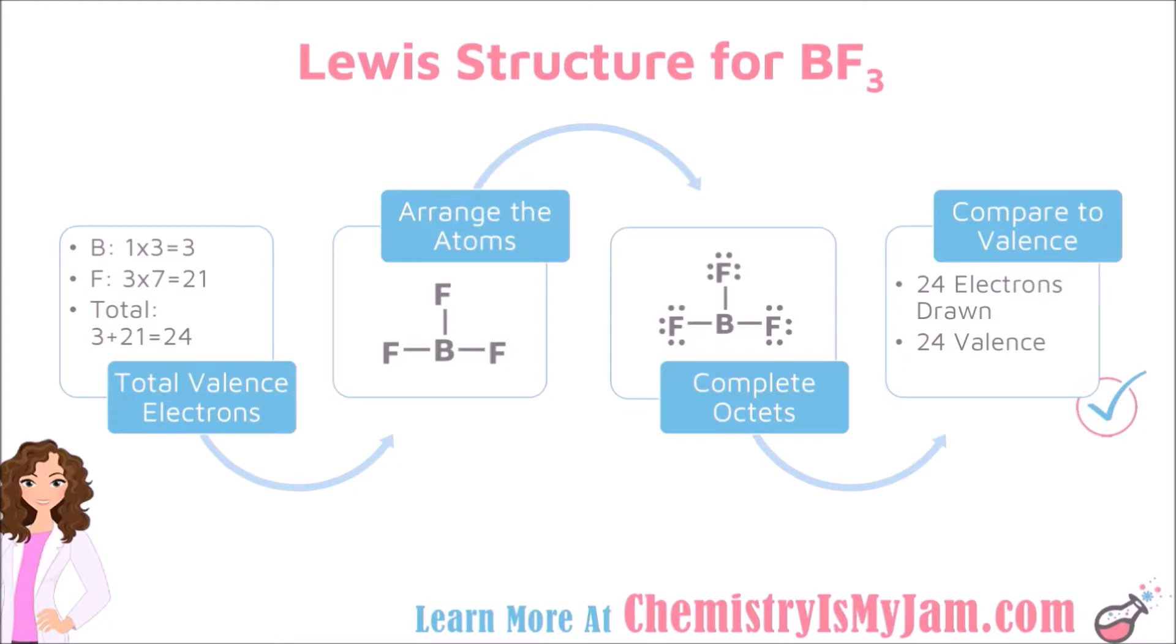Remember that boron is most of the time stable with 6 electrons. There are cases where boron has 8. If I had gotten to this last step and I needed 2 more electrons on this structure, it would have been perfectly fine to add them right there to the boron and complete its octet.